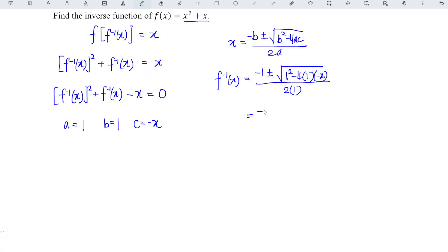So we should have minus 1 plus minus square root of 1 plus 4x divided by 2. And we know that for any real number,